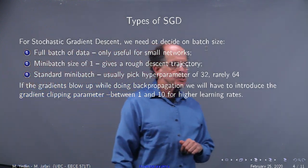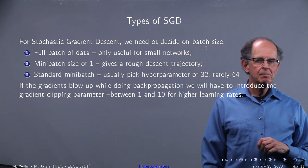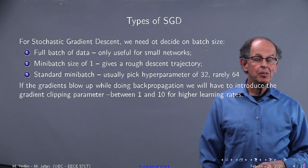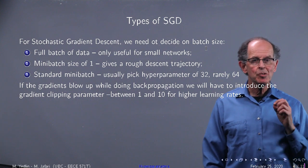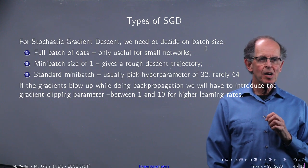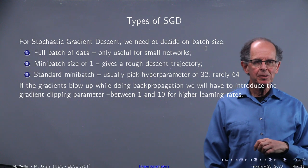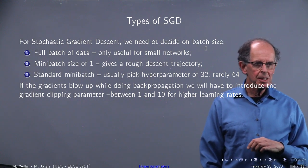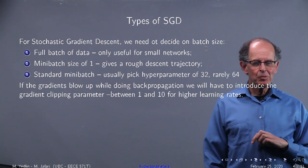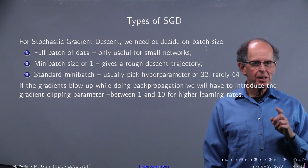We looked at SGD. There are different types. Take all the data and for each iteration use all the data for update. That's going to be very time consuming and is only useful for small data sets. A mini batch of size one, just do one data sample at a time, gives you a very rough descent trajectory. Standard mini batch - people say if you go over 32 you're going to be in trouble. So I say pick it at 32, rarely 64.